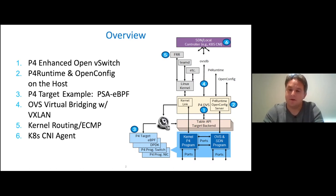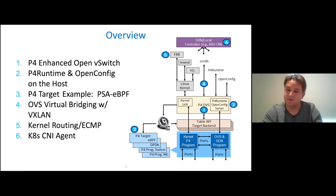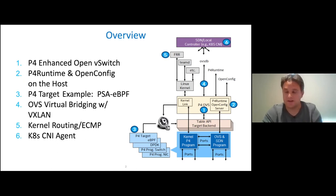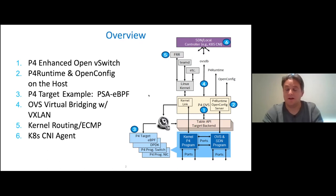We've also, as you'll see in the slides, created this additional data plane path where all three of these control planes are going to be able to control a set of P4 programs that are implementing the kernel data plane, the OVS data plane, and any of the programmable logic coming from an SDN controller or a local agent that wants to add additional innovation on top of what's already in the kernel and what can be done with OVS. With that, we'll go into the first section, to be presented by Namrata.